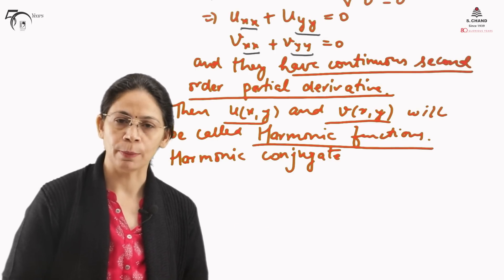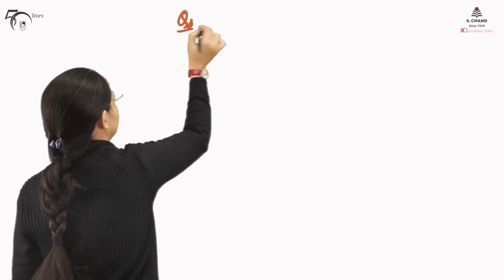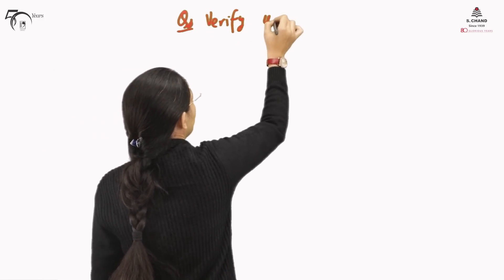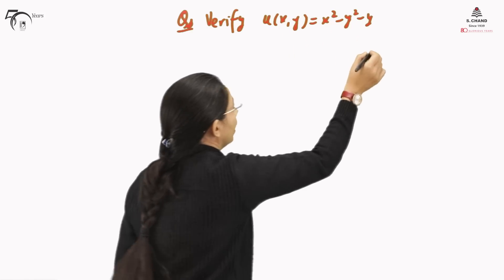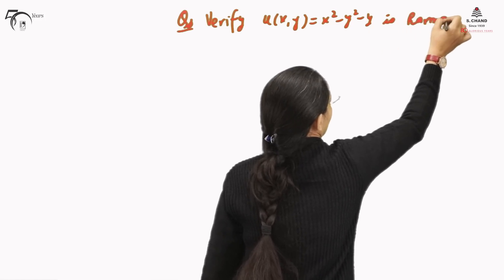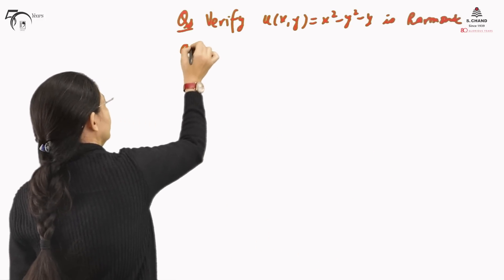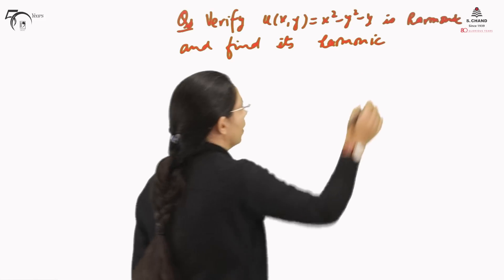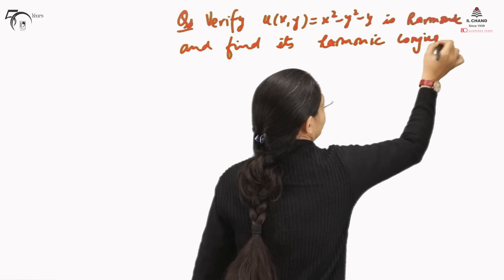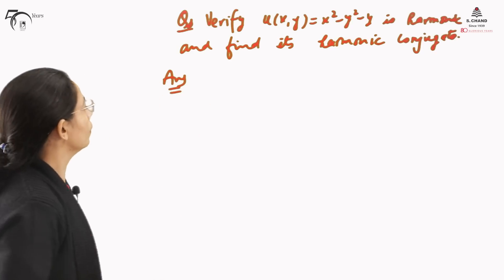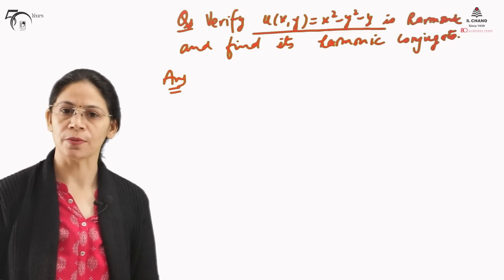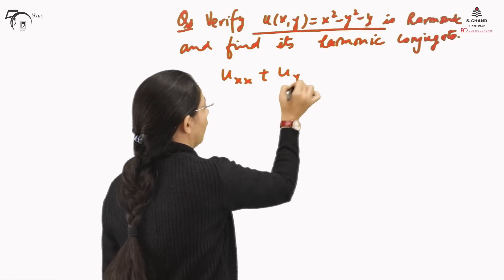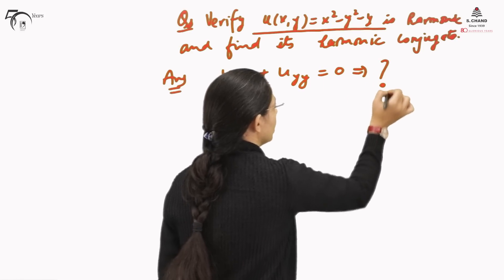We will make this clear with one example. Given U(x,y) = x² − y² − y, we need to verify that it is harmonic and find its harmonic conjugate. A function is harmonic if it satisfies the Laplace equation U_xx + U_yy = 0, so we check whether the given function satisfies this.